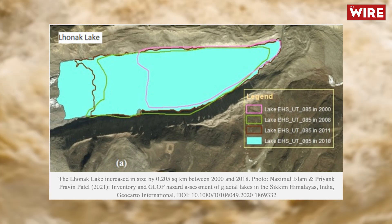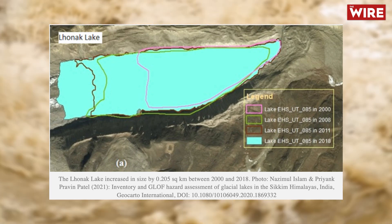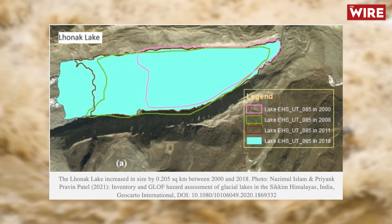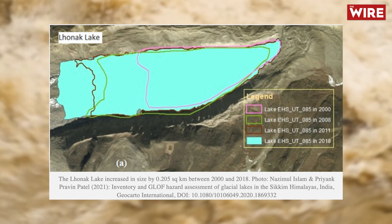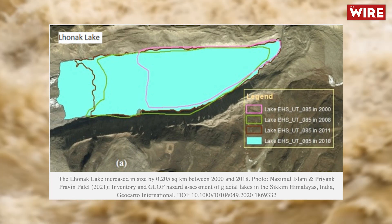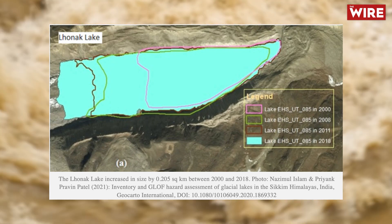In the graphic on screen, you can see the pink line indicating the size of the lake in the year 2000 and the size of the glacial lake in 2018. In his column for Wire Science, Professor C.P. Rajendran points out that other studies had also predicted such a disaster.